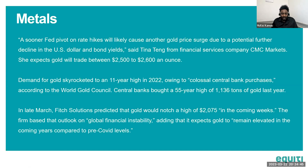A Fed vote on rate hikes will likely cause another gold price surge due to potential decline in the US dollar and bond yields, according to Tina Tang from CMC Markets, who expects gold to trade between $2,500 and $2,600 an ounce. On Monday, gold hit above $2,000, trading at $2,009, before dropping to $1,941. Demand for gold skyrocketed to an 11-year high in 2022, owing to colossal central bank purchases, with central banks buying a 55-year high of 1,136 tons of gold last year according to the World Gold Council.